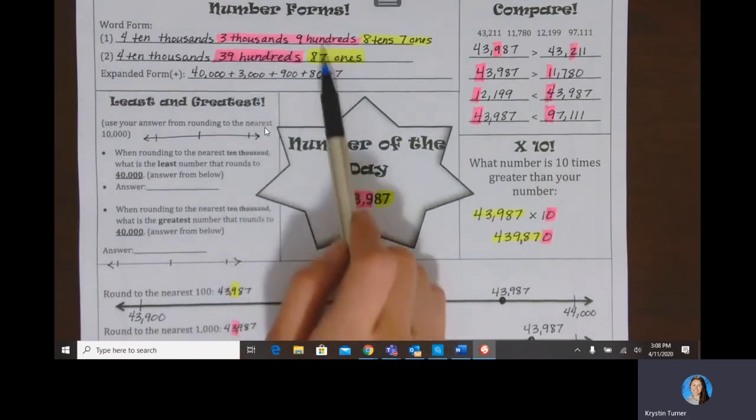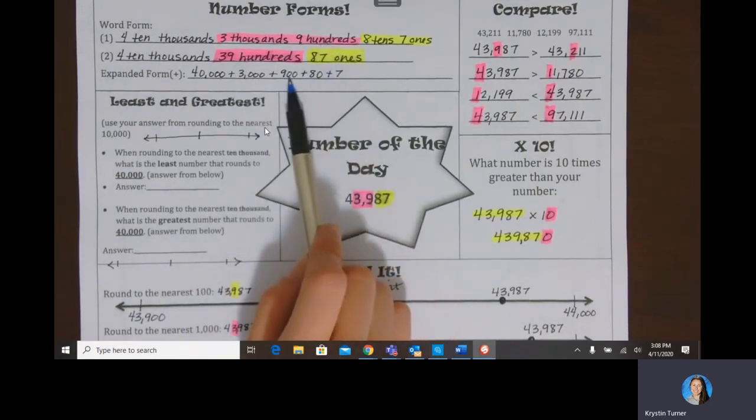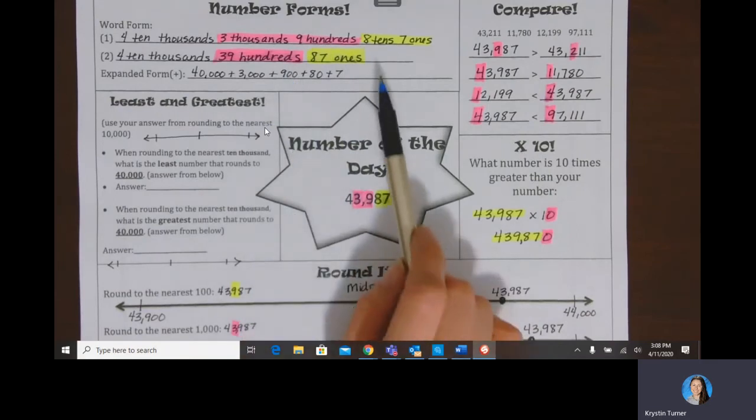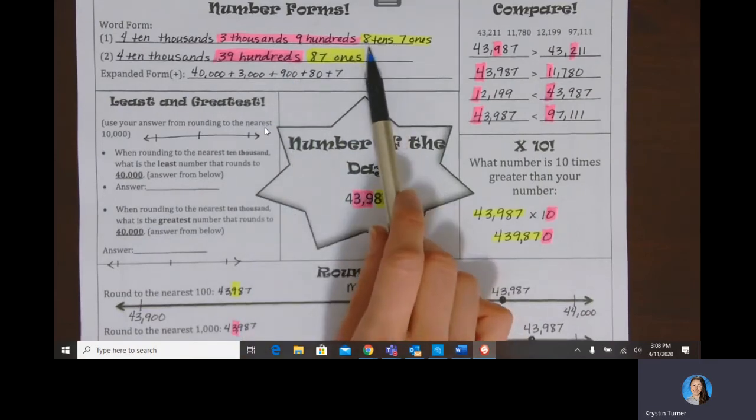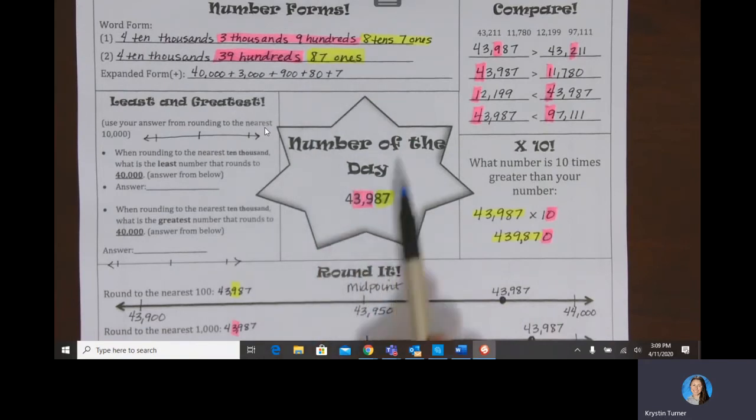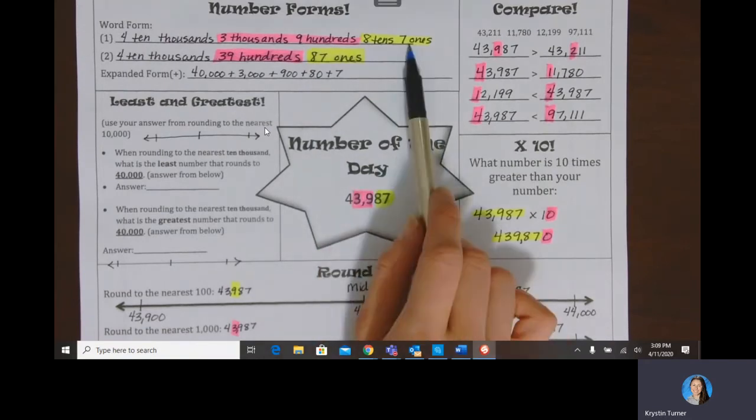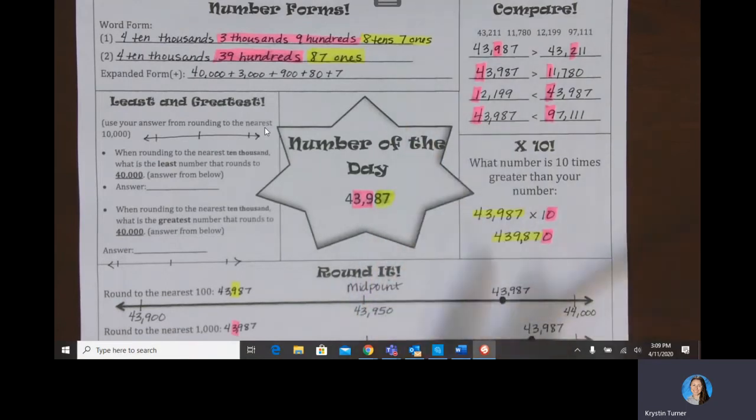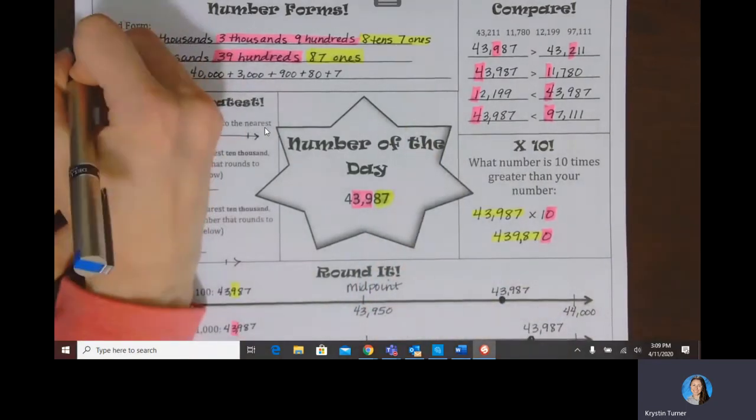The nine is in the hundreds place value, so 900. The eight is in the tens place value, so eight tens would be 80. And then the seven is in the ones place value, so seven ones.